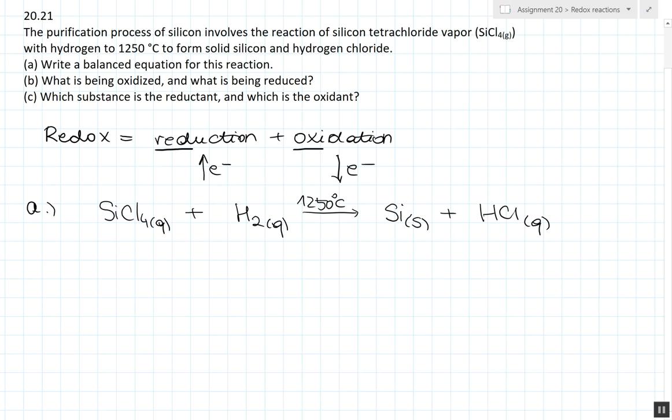We see that we have 4 times more chlorine on the left side than on the right side, so we have to multiply hydrogen chloride by 4. And now we have to balance the hydrogen atoms. We have 4 atoms on the right side, so we have to multiply the hydrogen molecule by 2.